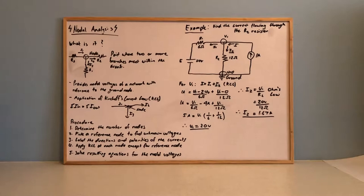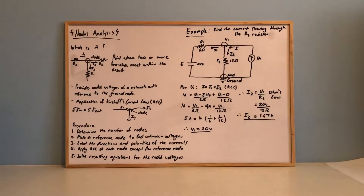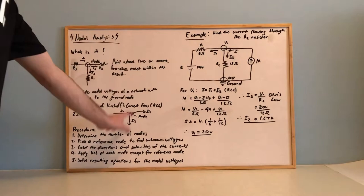Through nodal analysis it provides the nodal voltages of a network. This can be seen by the unknown nodal voltage such as V1 and the reference node which is known as ground. It is also an application of Kirchhoff's current law where the sum of currents into a node is the sum of the currents exiting a node.